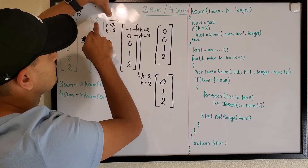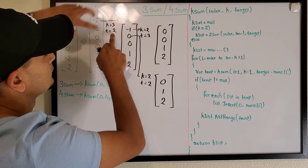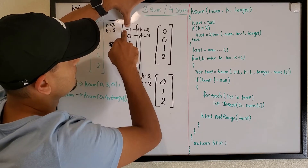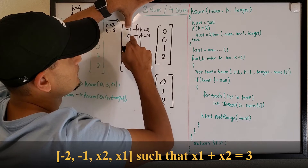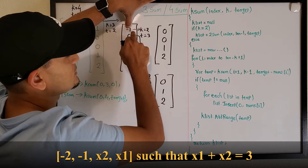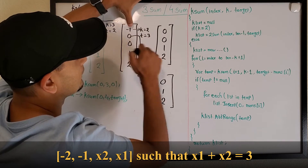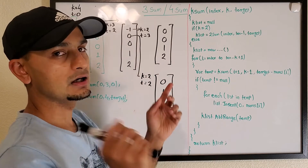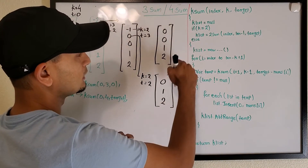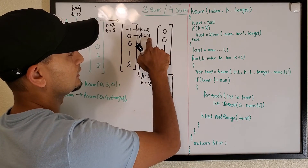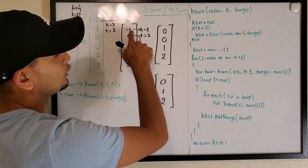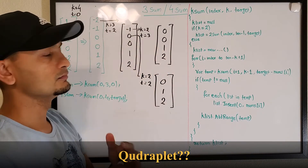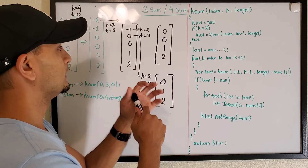We apply the same logic again: with k=3 and target=2, the remaining array is [-1, 0, 0, 1, 2]. We pick -1 and say: find 2 numbers in the remaining array [0, 0, 1, 2] whose sum is 3. Applying 2Sum with two pointers gives us 1 and 2. We group this with -1 and then with -2, giving the quadruplet [-2, -1, 1, 2], which sums to zero.